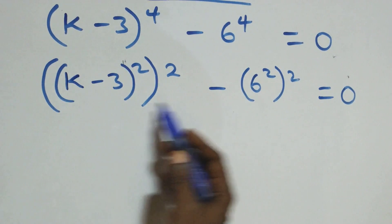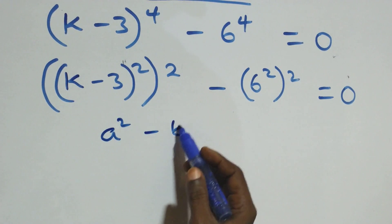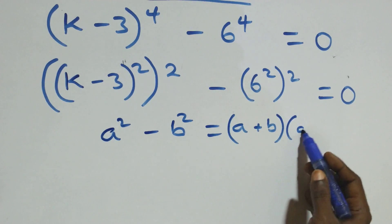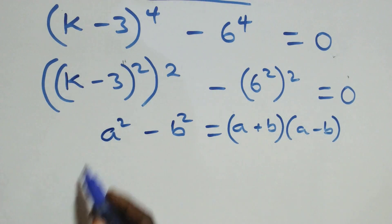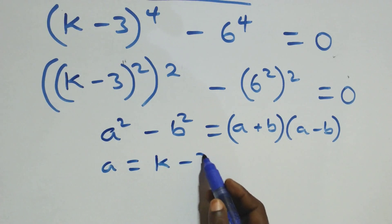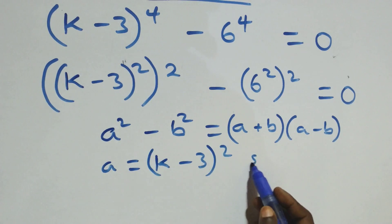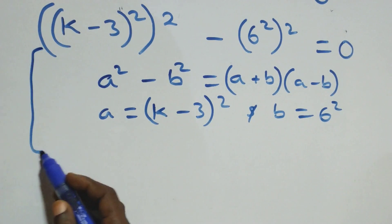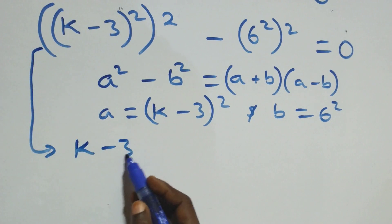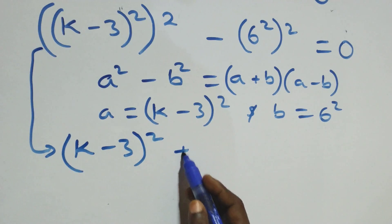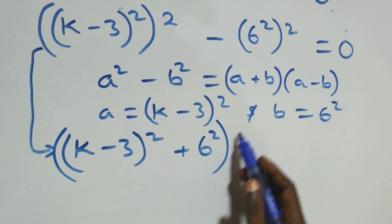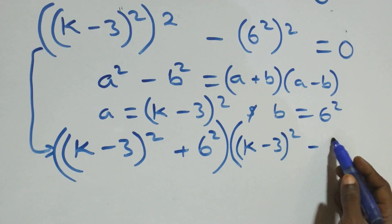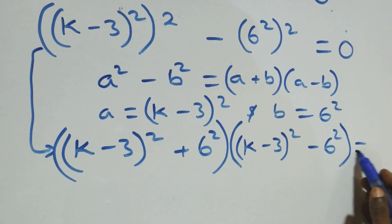This follows the difference of two squares: a squared minus b squared equals (a plus b)(a minus b). Here, a stands for (k minus 3) squared and b stands for 6 squared. So it becomes (k minus 3)^2 plus 6^2, times (k minus 3)^2 minus 6^2, equals 0.